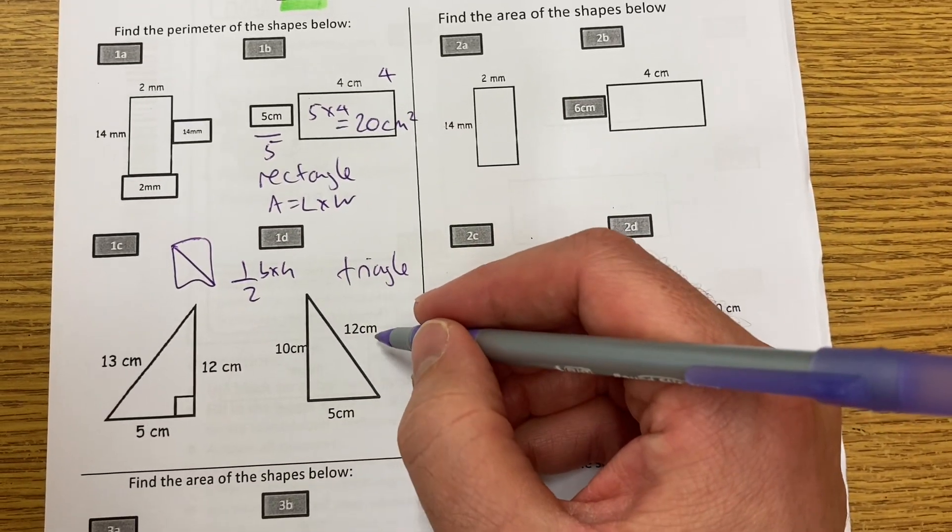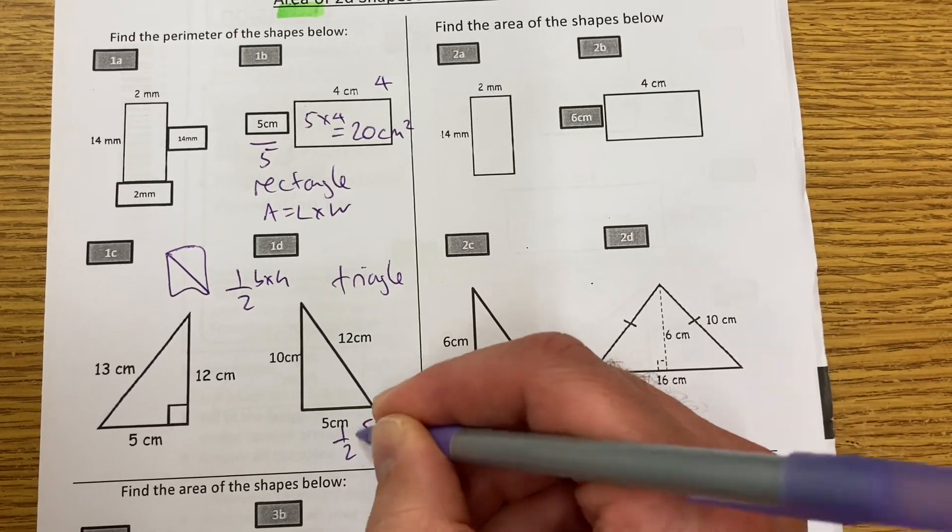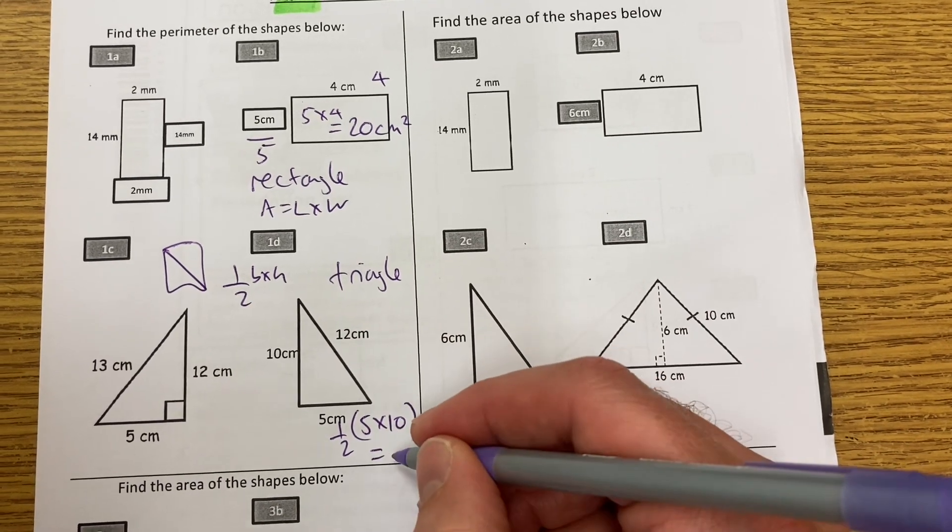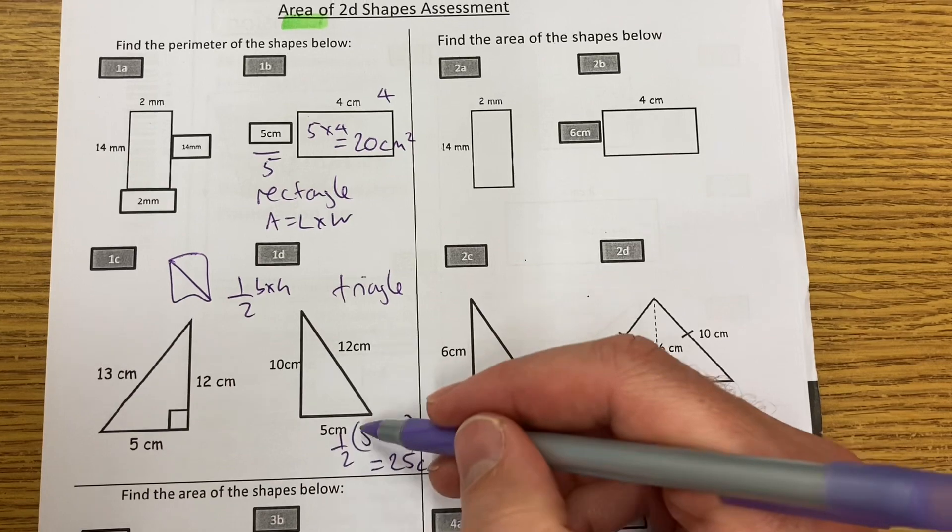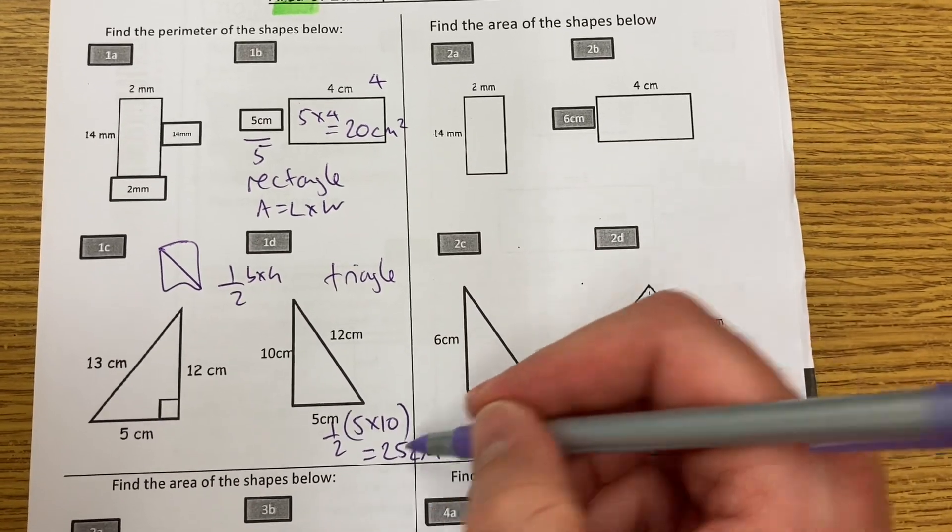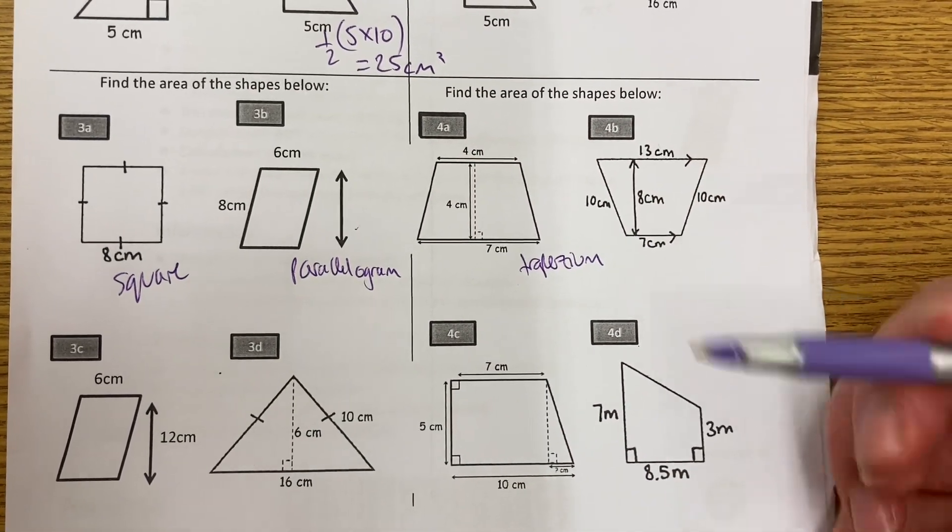So I don't actually need that 12 here. I actually need 5 times 10 divided by 2. That's 50 divided by 2, which is 25. Or I could have halved the 10 and then times by the 5. Either way, I get 25. Now let's look at the other two: parallelogram and trapezium.